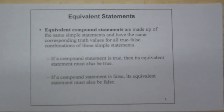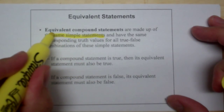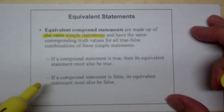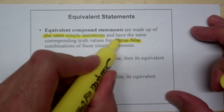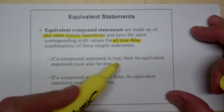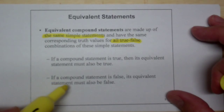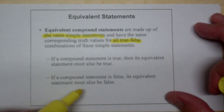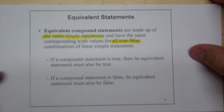Equivalent compound statements are made up of the same simple statements and have the same corresponding truth values for all true-false combinations of these simple statements. If a compound statement is true, then its equivalent statement must also be true. If a compound statement is false, its equivalent statement must also be false. That's what we showed in section 3.4.